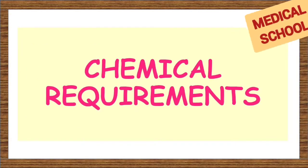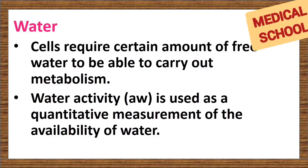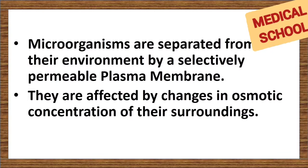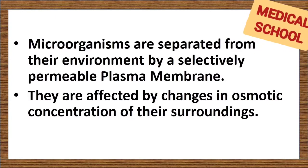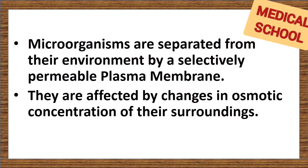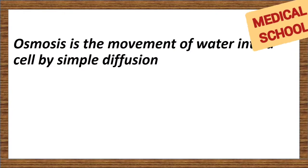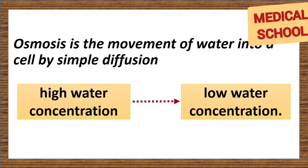Starting with the most important chemical requirement: water. Cells require a certain amount of free water to carry out metabolism. Water activity is used as a quantitative measurement of the availability of water. Microorganisms are separated from their environment by a selectively permeable plasma membrane and are affected by changes in osmotic concentration of their surroundings. The availability of water is inversely related to osmotic pressure. Osmosis is the movement of water into a cell by simple diffusion, occurring from regions of high water concentration to regions of low water concentration.